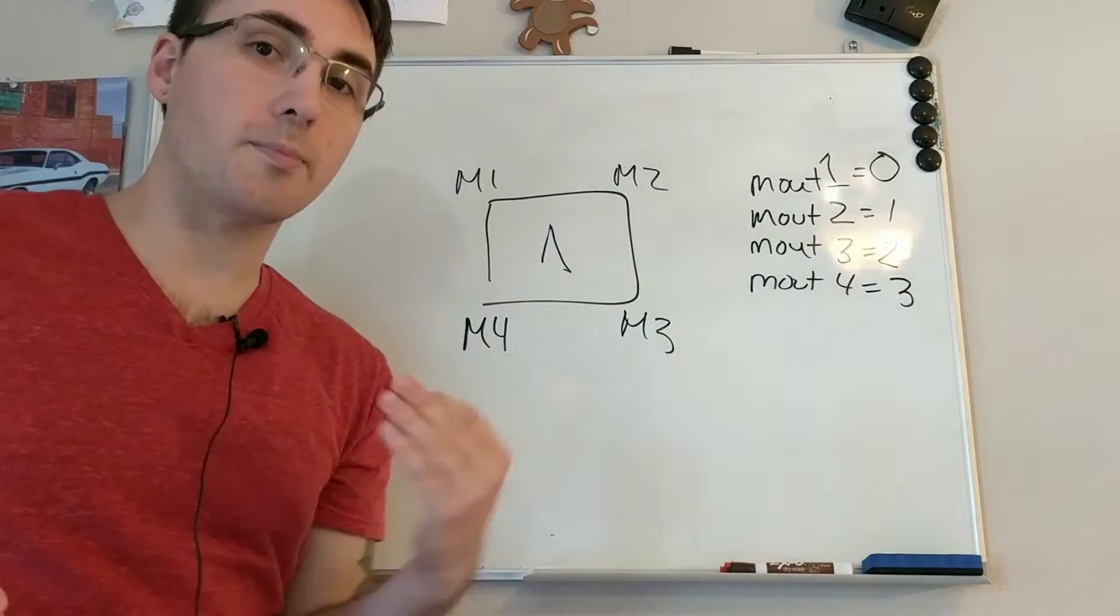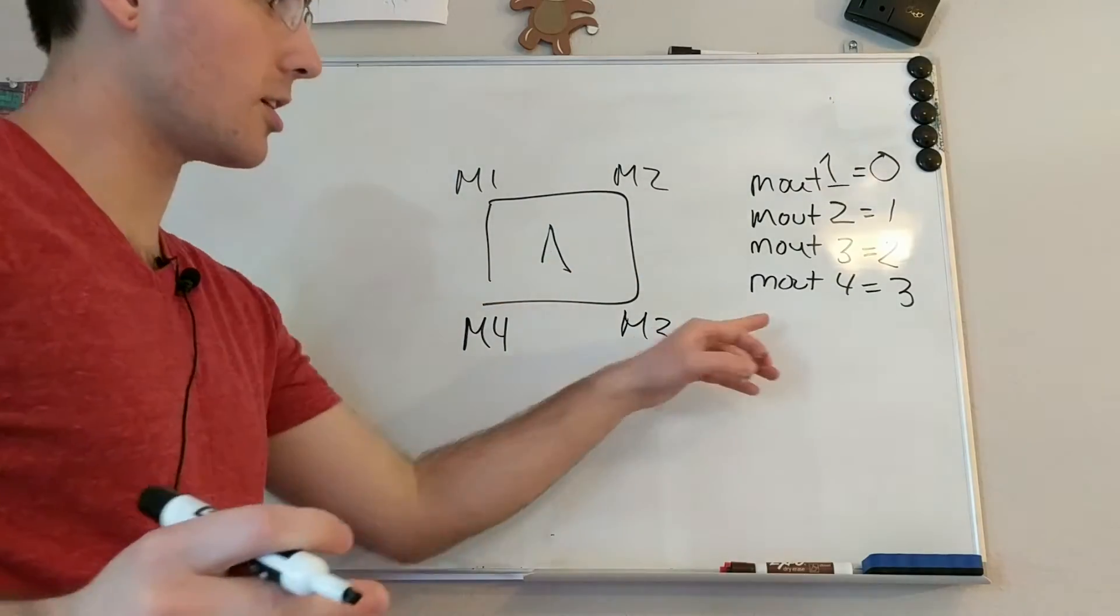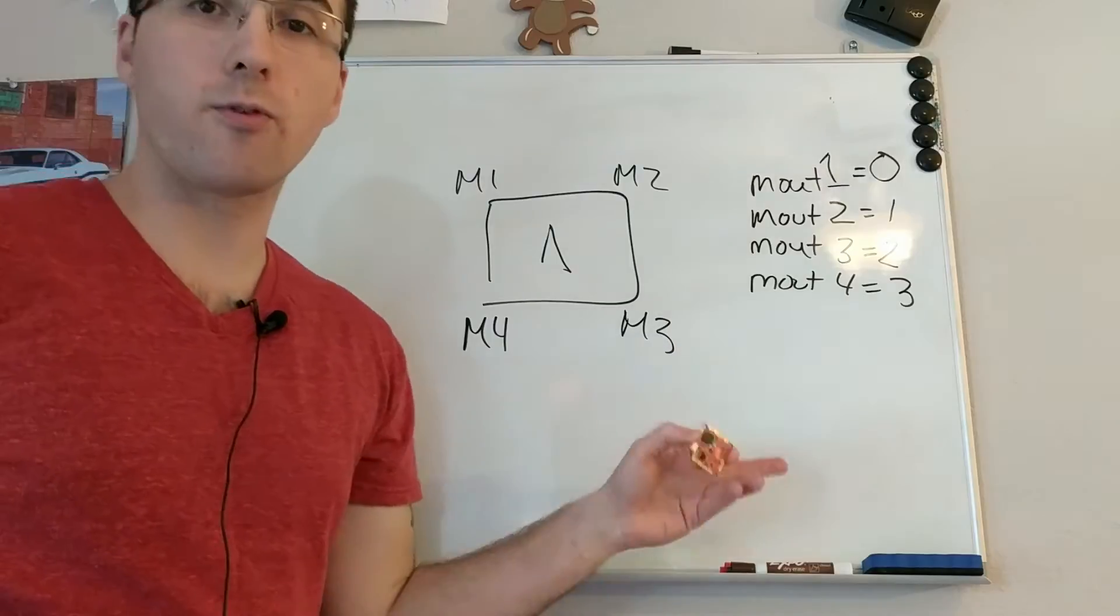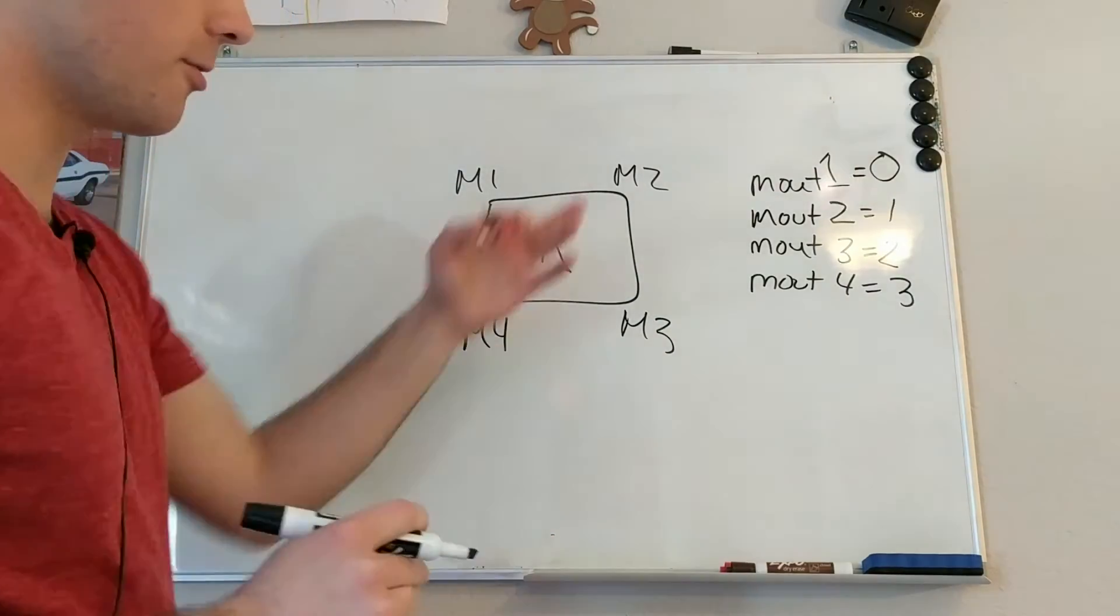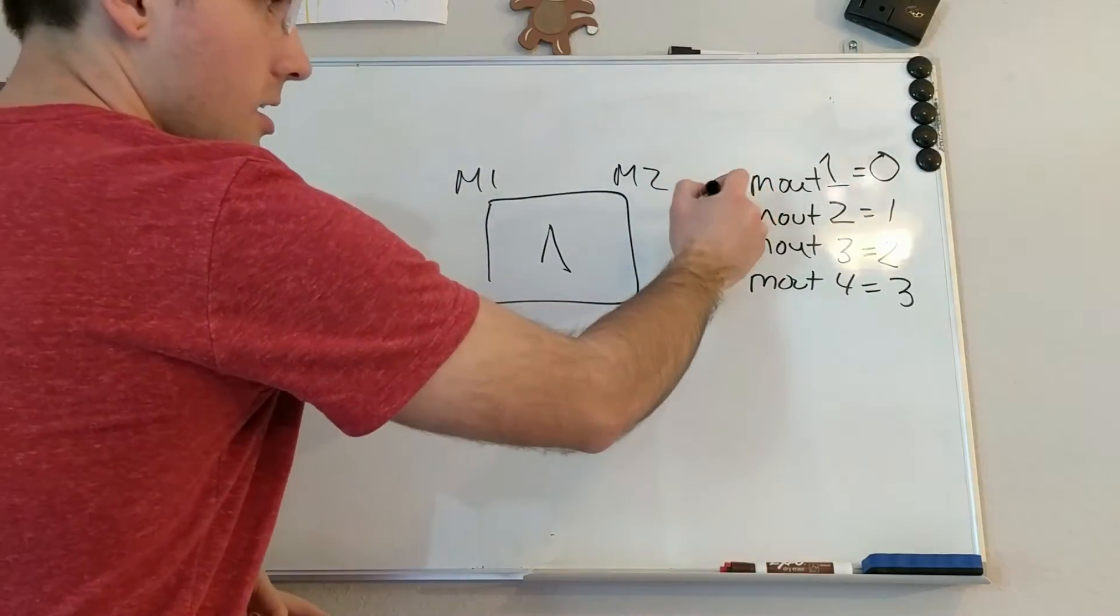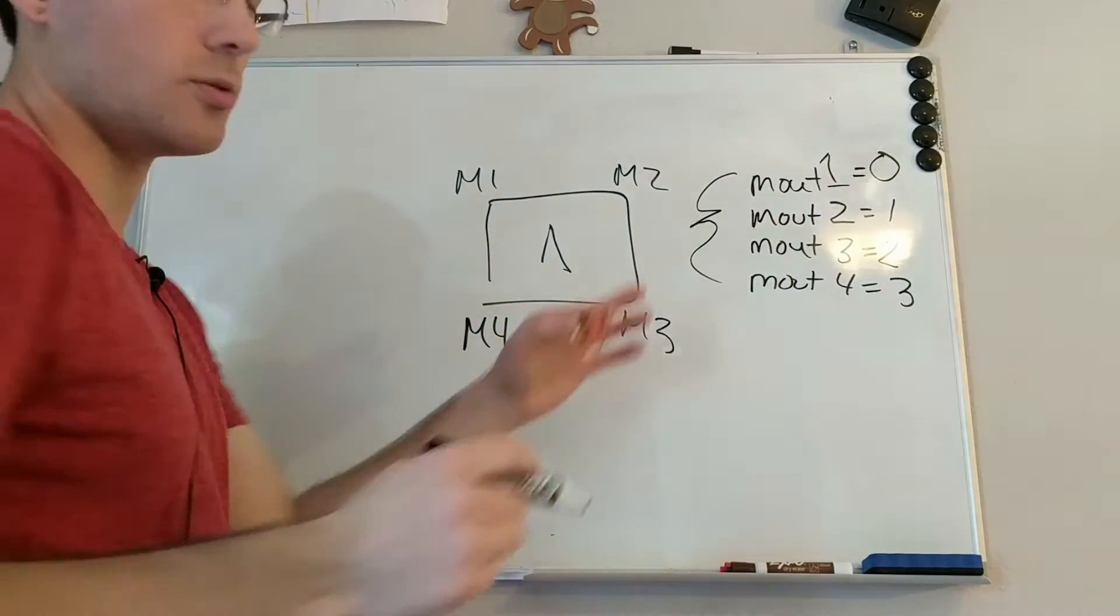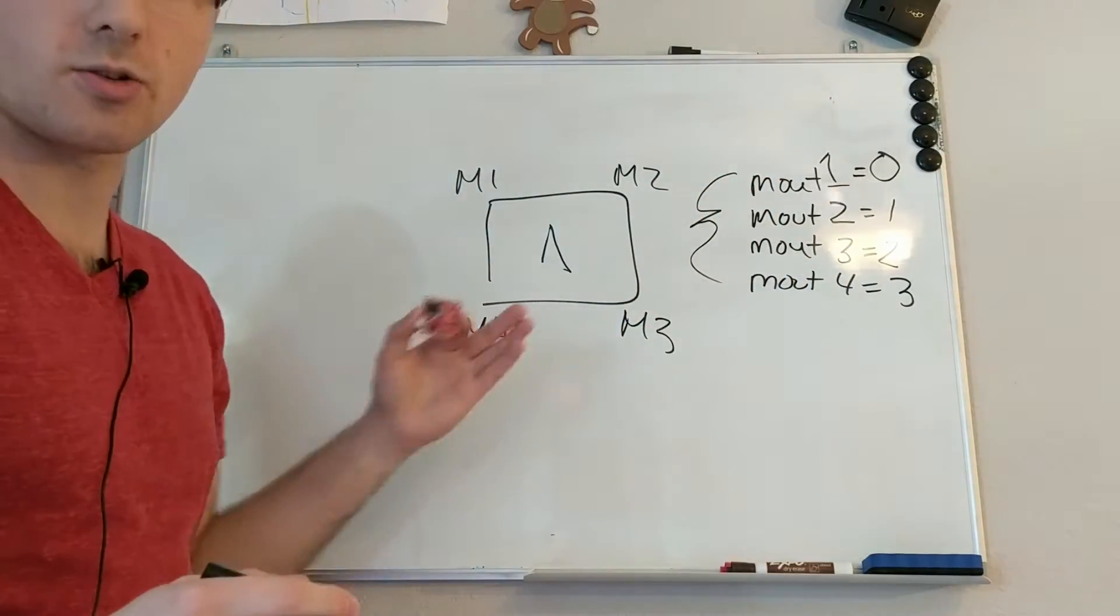Now if you actually do a dump in the console you'll see that there's also M out 4, 5, 6, and 7 and I think there might be an 8 as well. But for right now these are the only ones that we're going to deal with because we're wanting to remap it.